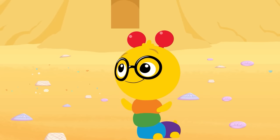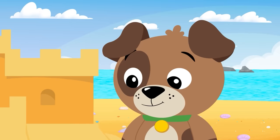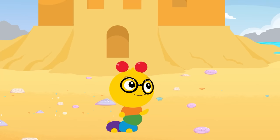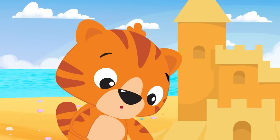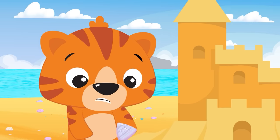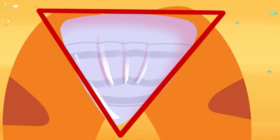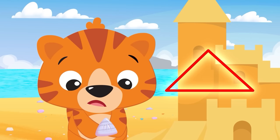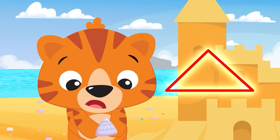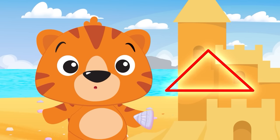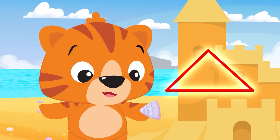Do shells really come from so many different kinds of animals? They do! Maybe that's why shells are so many different shapes. What shapes do you see? Well, here's one with three sides — one, two, three. A three-sided shape is called a... triangle!